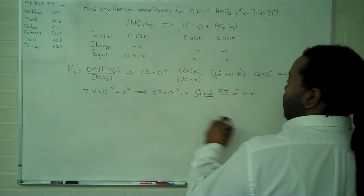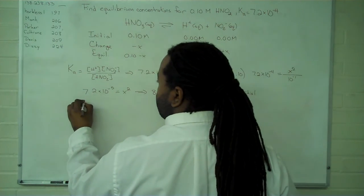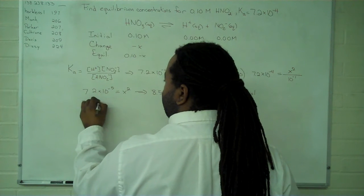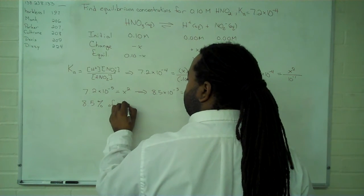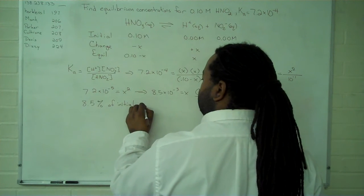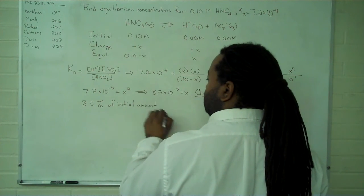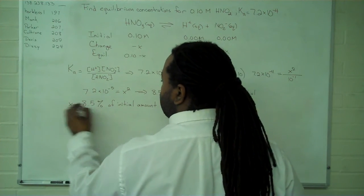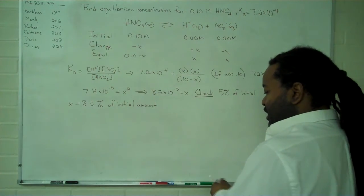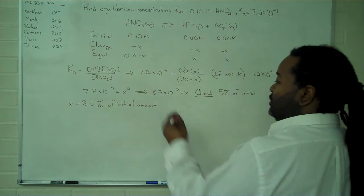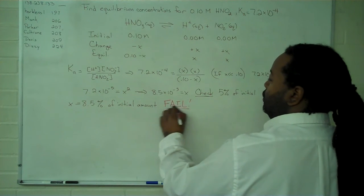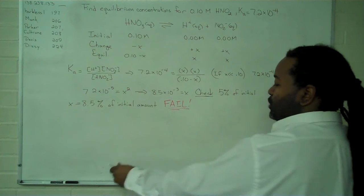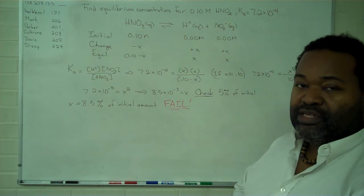It turns out that this is instead 8.5% of the initial amount. That means that this is a fail. So we cannot use the approximation method in this case.